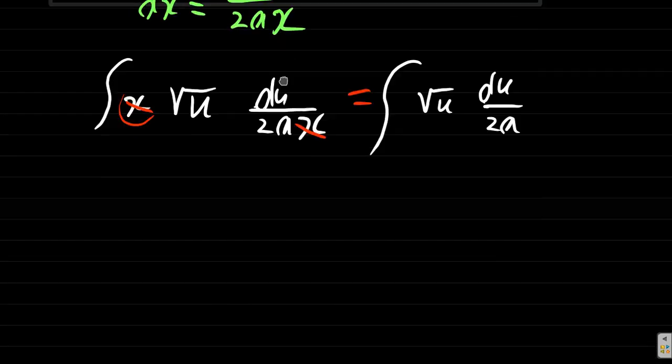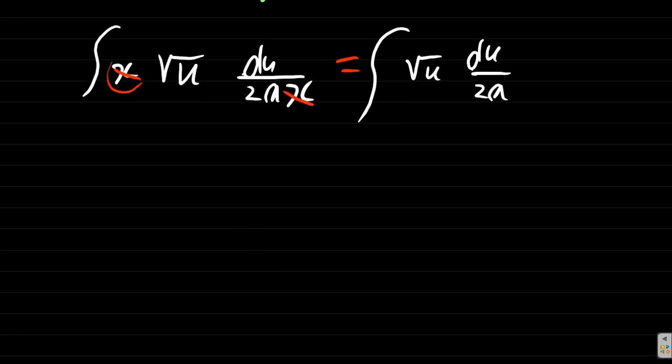This can be written as 1 over 2a integral of square root of u du. Remember, a is just a number, whatever number that is or you want it to be.